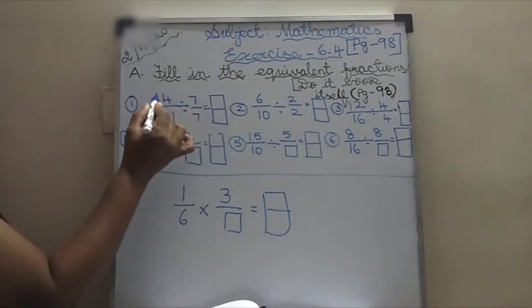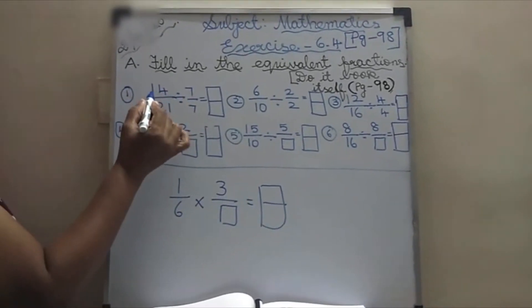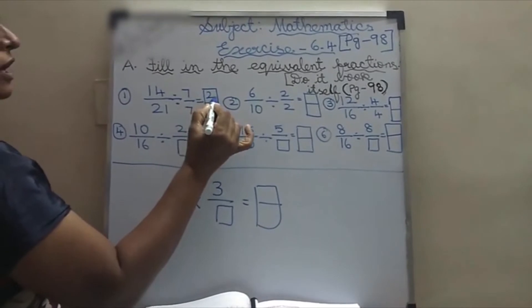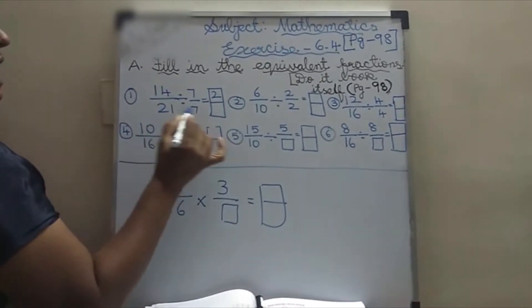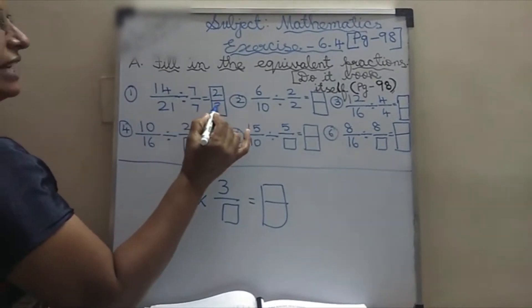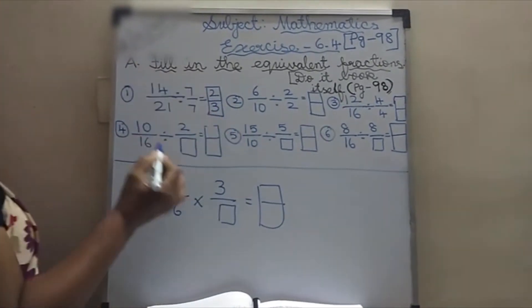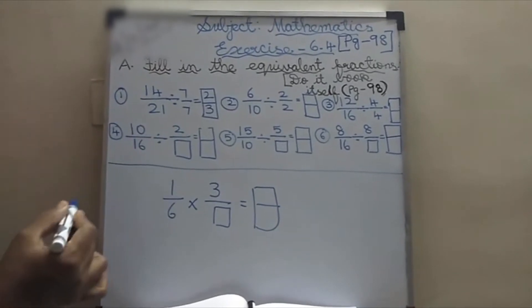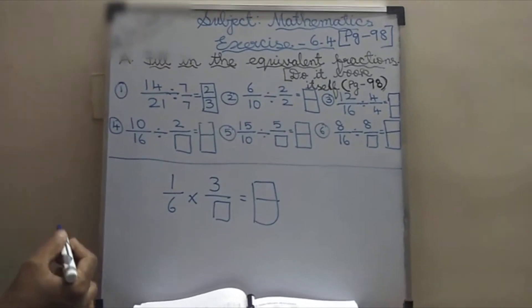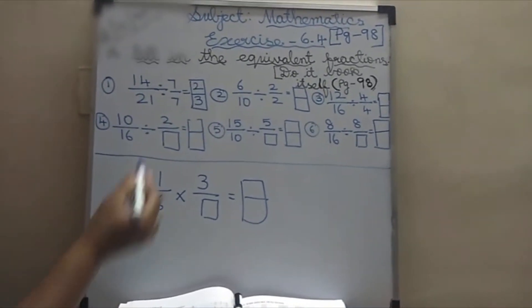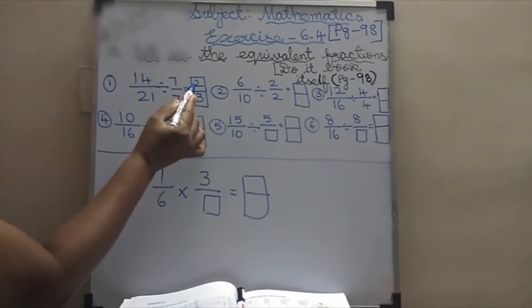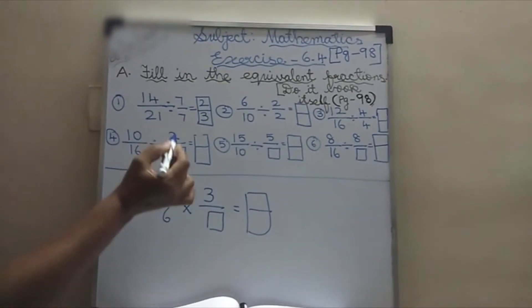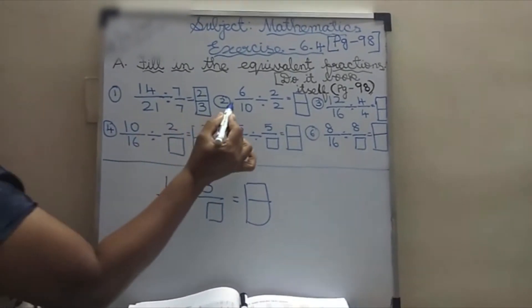In the 7 tables, 14 goes. What will come? 7 — 2s are 14, and 7, 3s are 21. You have to say the tables so that it will be very easy for you. So what's the answer? 2 by 3.